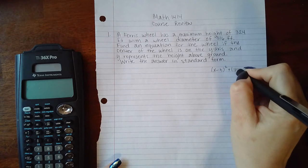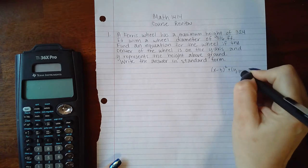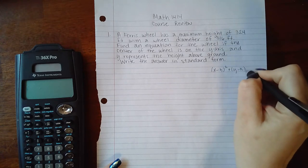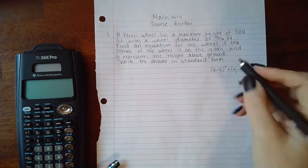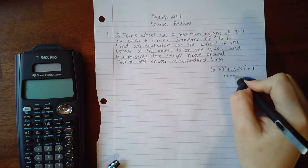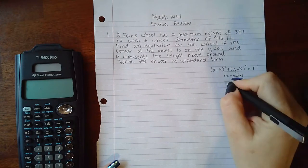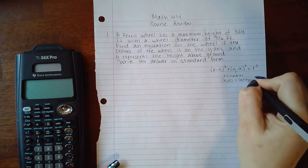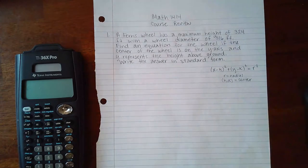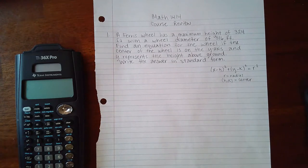The equation for a circle is x minus h squared plus y minus k squared equals r squared. That's what I want, where r is the radius and where h comma k is the center of that circle.